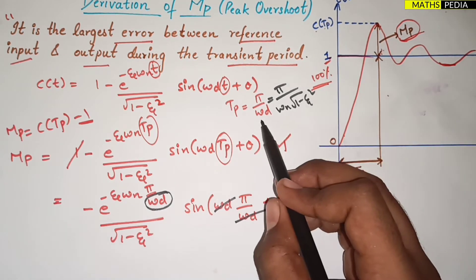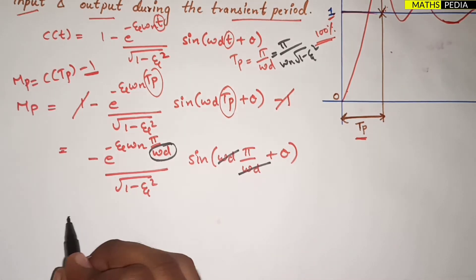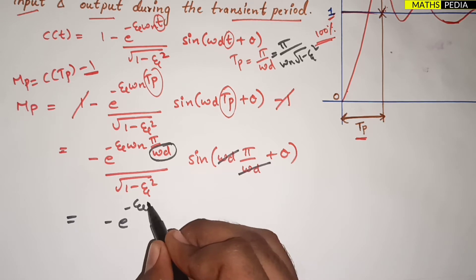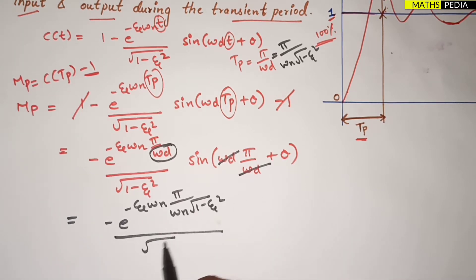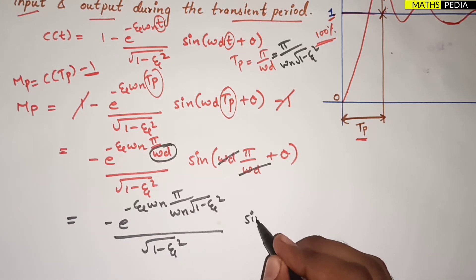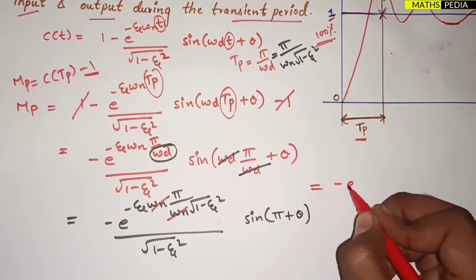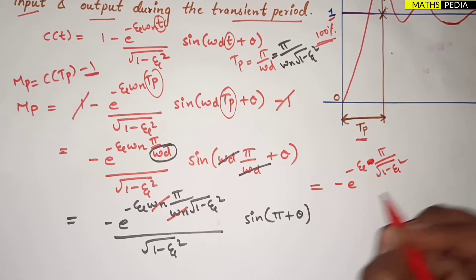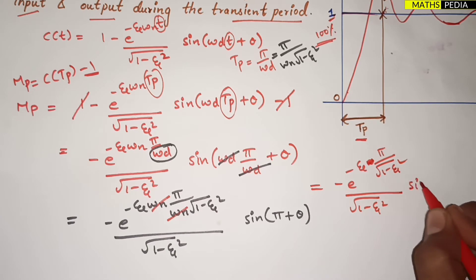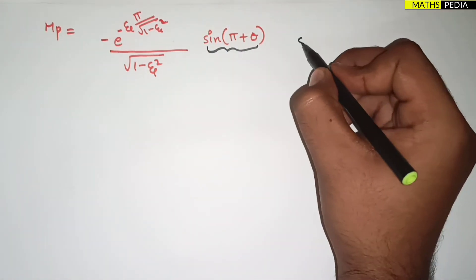We also replace ωd in the exponent using the formula ωd = ωn·√(1−ζ²), so π/ωd = π / (ωn·√(1−ζ²)). Substituting: the exponent becomes −ζωn · π/(ωn·√(1−ζ²)). The ωn cancels, leaving −ζπ/√(1−ζ²). The expression is now: −e^(−ζπ/√(1−ζ²)) / √(1−ζ²) · sin(π + θ).